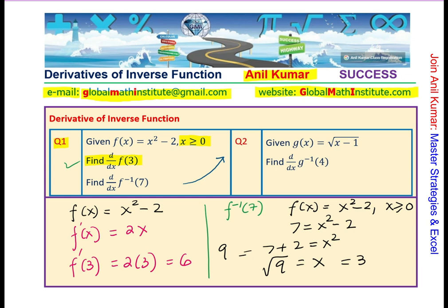So, you see, f inverse of 7 actually is 3. So, at the end, we will also check how the derivative at 3 is related with that of the derivative of f inverse 7.